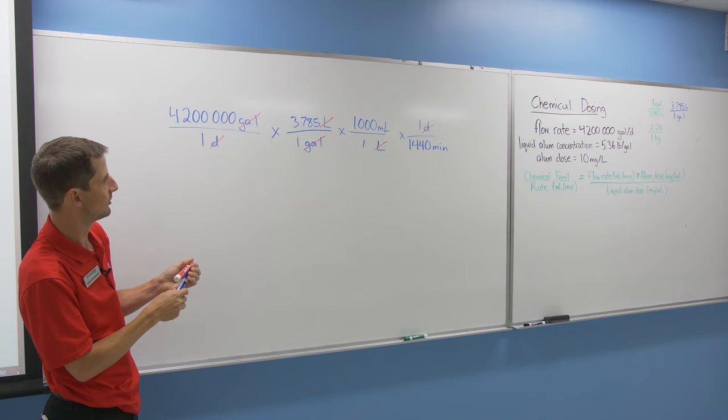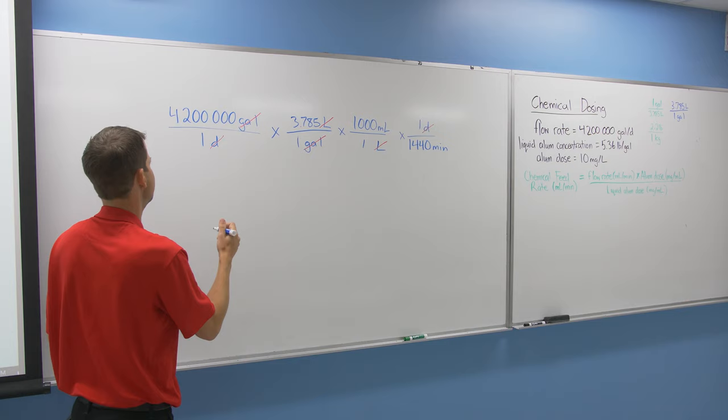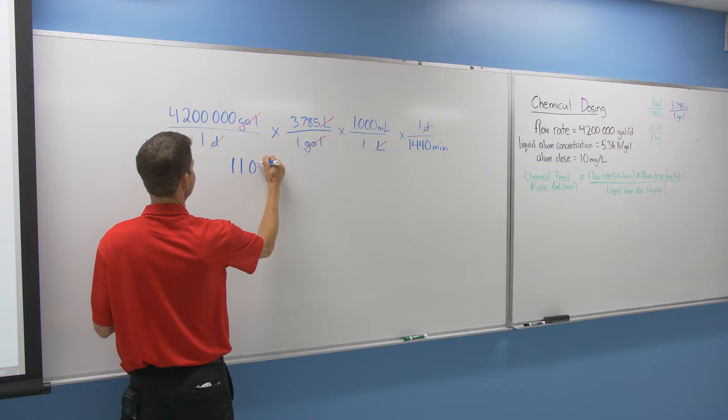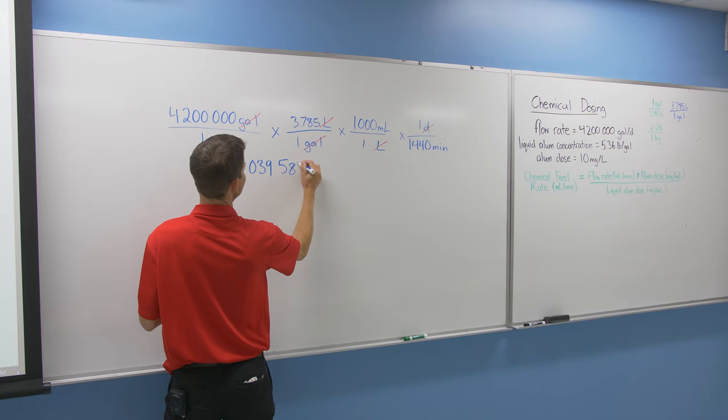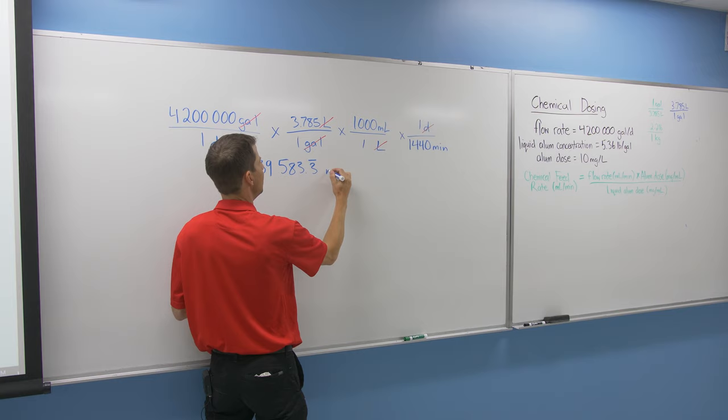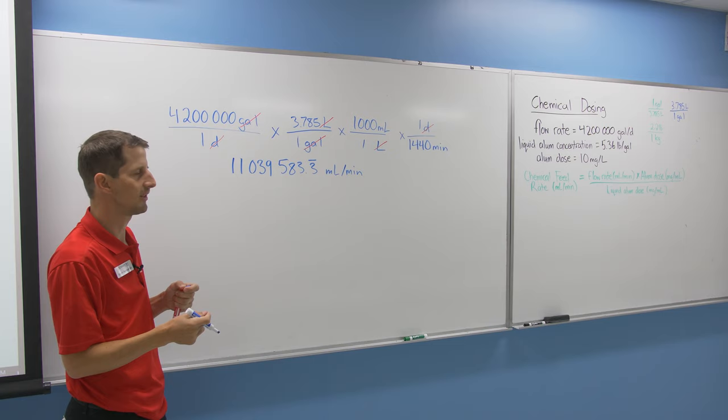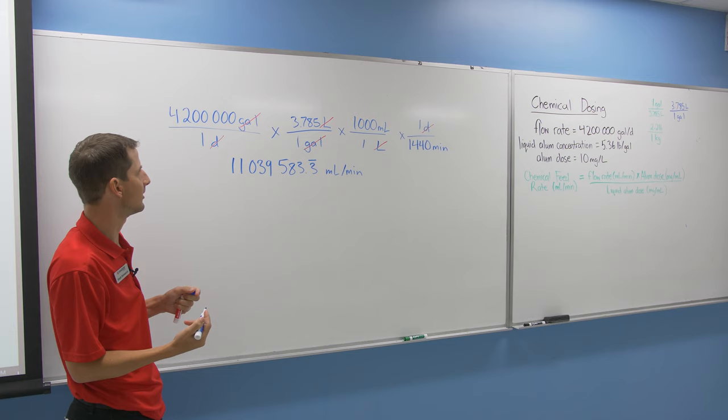The answer for that conversion is 11,039,583.3 milliliters per minute. It's better to carry all your units when doing the math until the very end. If you calculate this and round early, you end up off by about seven liters. It's always good practice to carry all your digits. That's our first conversion.